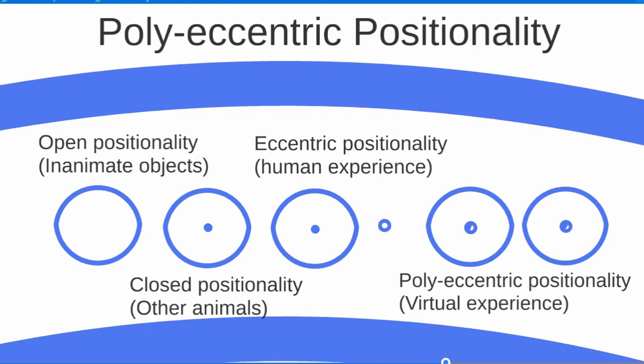Closed positionality is the first level, observed in objects with nothing in them. Open positionality applies to animals — we are unsure if they have a self-awareness boundary, but they seem to operate as such. Humans have an eccentric positionality, where we have a self-awareness boundary and we try to break out of it. Jøstemol poses that the next step in evolution is polycentric positionality, which can only be achieved in the virtual. If you think of yourself in a virtual simulator like Google Glass, it's not unthinkable to be able to operate multiple bodies at once, potentially within the animal world — operating multiple beings or robots simultaneously, potentially at different times of day, different time zones, and different spatial areas.